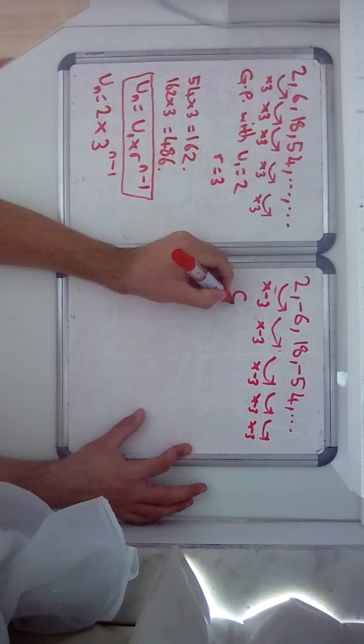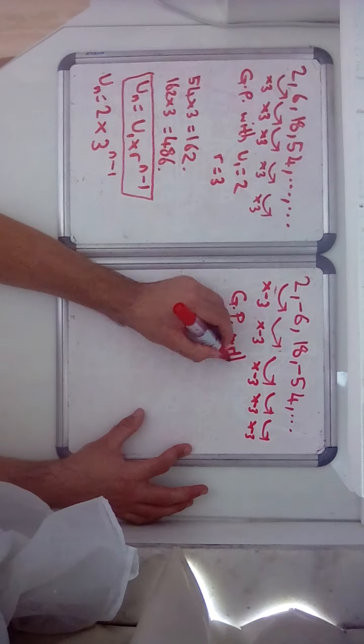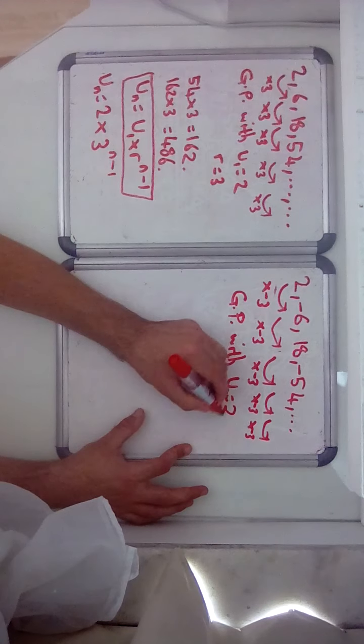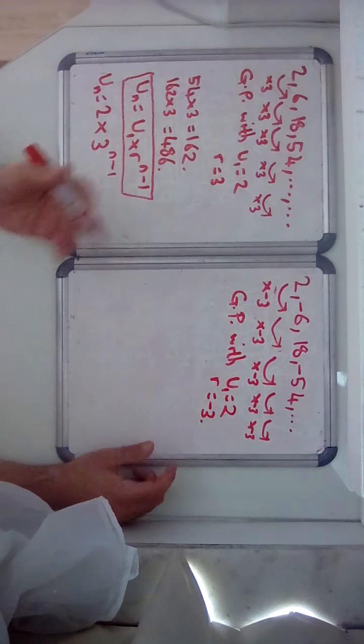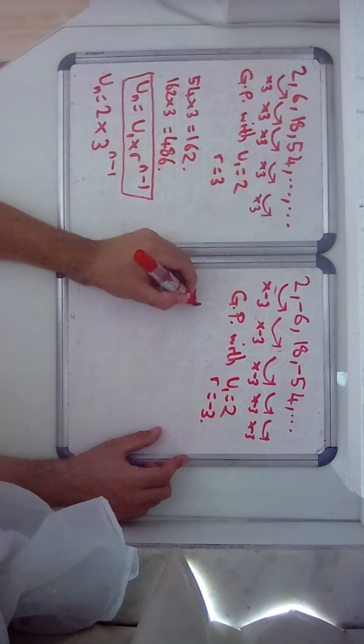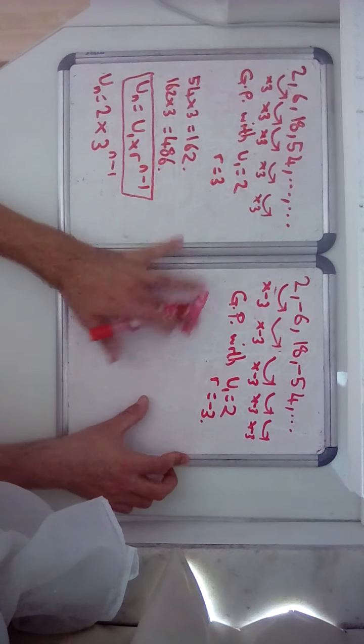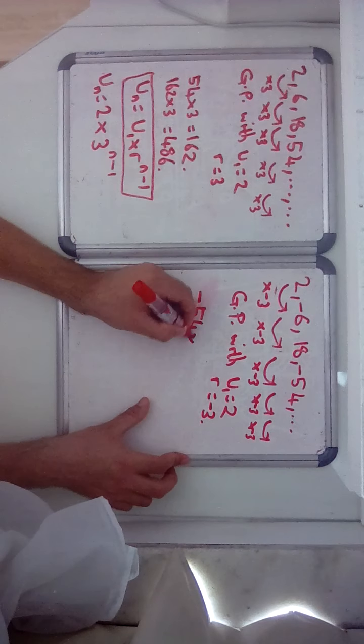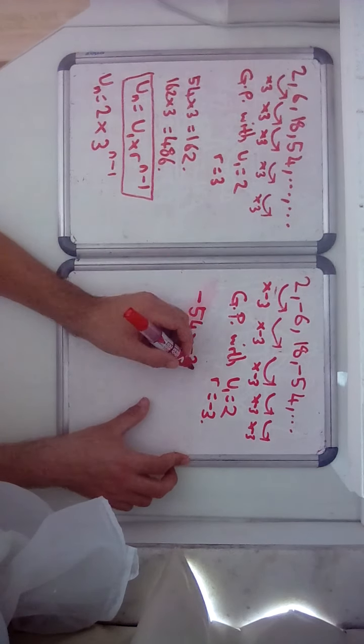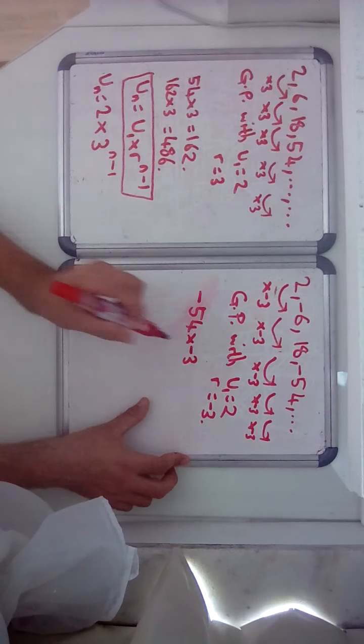This is a GP, geometric progression, with u1 equals 2 and r equals minus 3. So next two terms is going to be minus 54 times minus 3. I'm going to use my 162, and minus times a minus is 162 again.